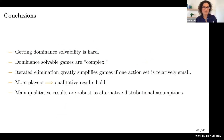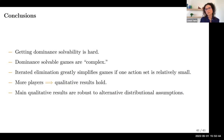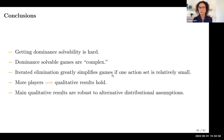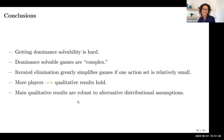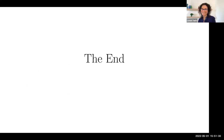To conclude: first, achieving dominant solvability is really hard — probably the least surprising observation. But dominant solvable games are complex in the sense that the number of iterations required is generically very large. Nonetheless, iterated elimination greatly simplifies games at least when the game is sufficiently imbalanced in terms of the number of actions, and this simplification happens quickly with few iterations. Adding more players makes dominant solvability even more challenging, and the main qualitative results are robust to alternative distributional assumptions.